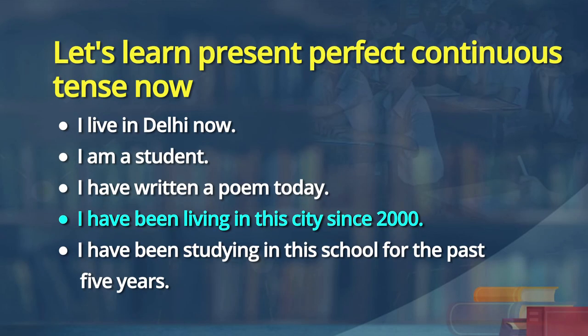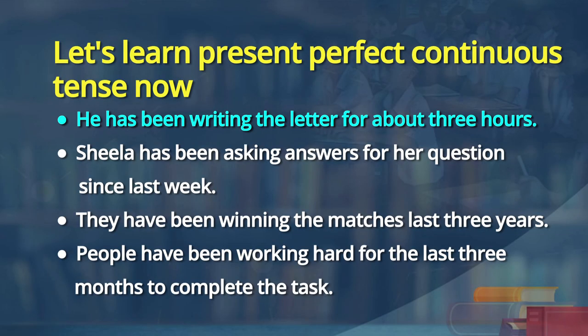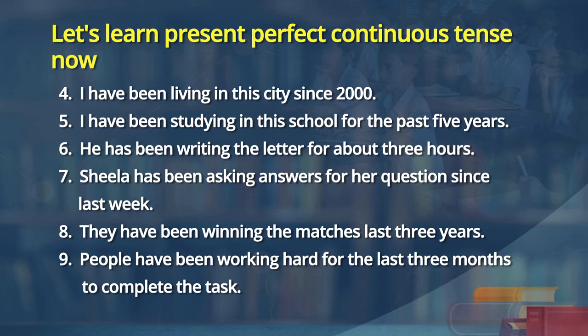Now look at sentences four to nine. I have been living in this city since 2000. I have been studying in this school for the past five years. He has been writing the letter for about three hours. Sheila has been asking answers for her questions since last week. They have been winning the matches for the last three years. People have been working hard for the last three months to complete the task. They are still doing the work — started in 2000 and am I still continuing to live? Yes. That is what present perfect continuous is.